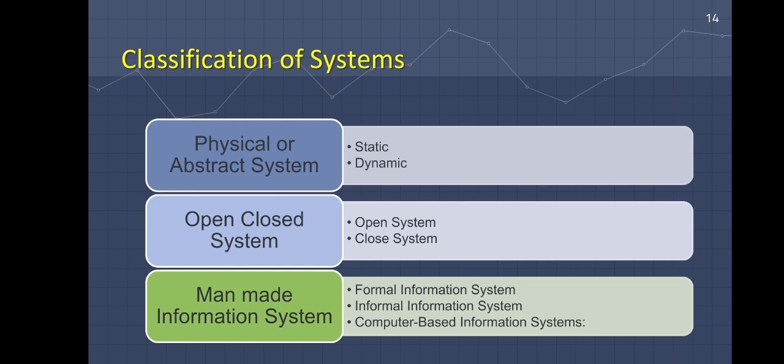The different types of man-made information systems are the formal information system, informal information systems, and the computer-based information system. Formal information systems are concerned with information flow from upper management to lower management. Memos, instructions, and other forms of communication flow are examples of this. Lower authority may provide feedback to upper management.